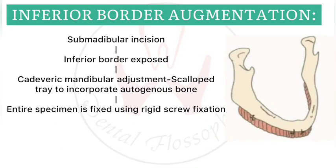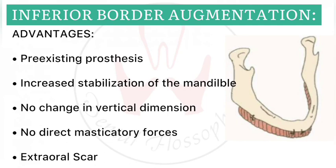In inferior border augmentation, mandibular incisions are made to expose the inferior border. A scalloped tray incorporated with autogenous bone graft is fixed with rigid screw fixation. Advantages include use of a pre-existing prosthesis, increased stabilization of the mandible, no change in vertical dimension, no direct masticatory forces at the surgical site, and an extraoral scar.